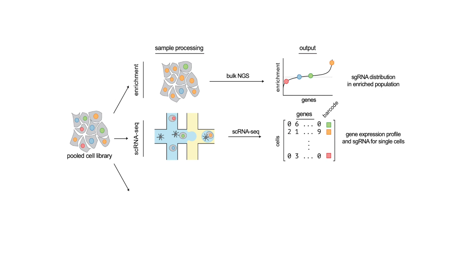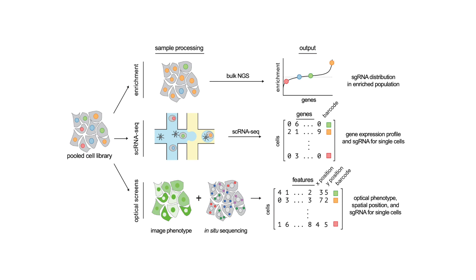In principle, it's fairly straightforward to generate a pooled perturbation library and perform a high-content assay to score single-cell phenotypes based on imaging features. However, this is only useful if we can link the phenotypic information with the underlying perturbation identities. Optical pooled screens fill in this missing information by using in-situ sequencing to read out genetic perturbations in each cell directly under the microscope.